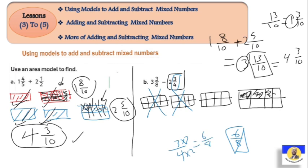Now we cancel six parts - one, two, three, four, five, six. The remaining parts are one, two, three, four, five. So the answer equals five over eight.